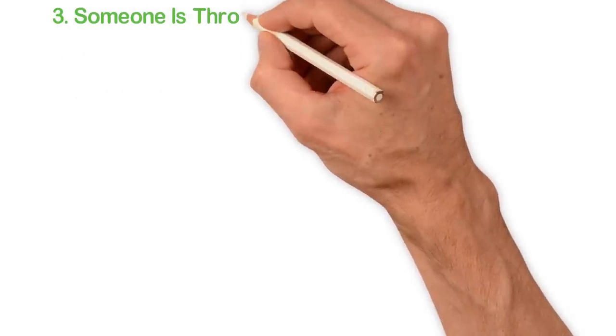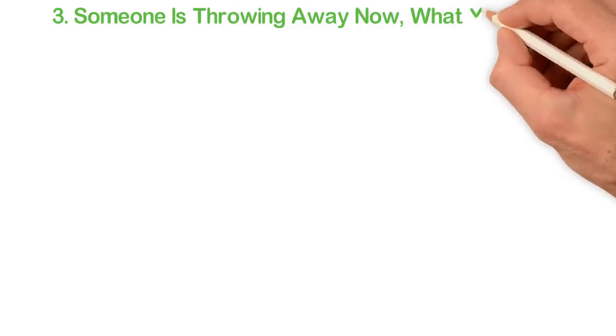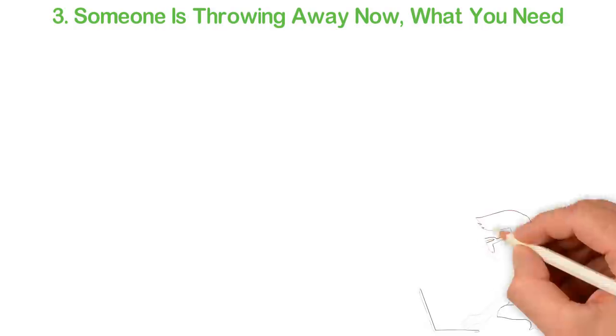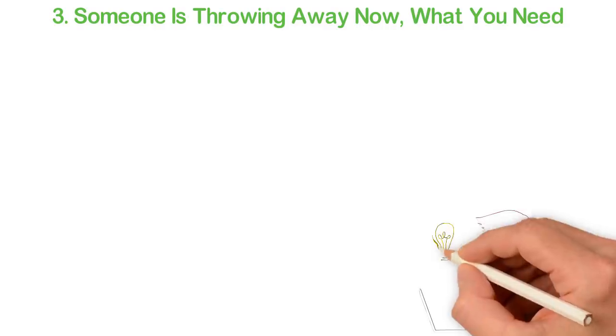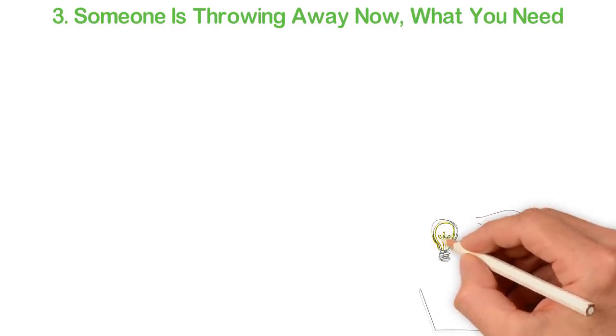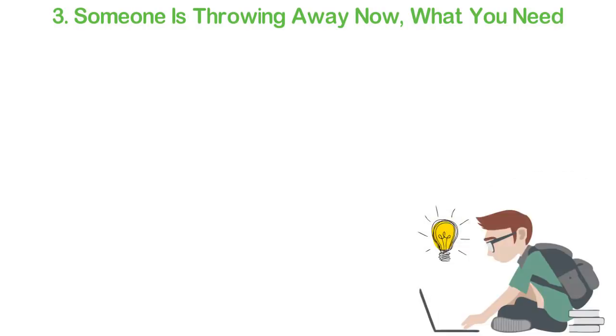3. Someone is throwing away now what you need. Life is complex. There are things others have but will never need. Yet, those are what you need to start that business or grow to the next level or even win that contract. This can be information, books or some physical items.